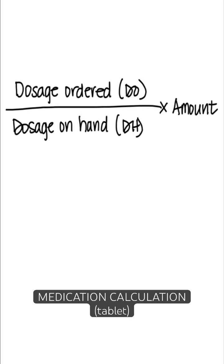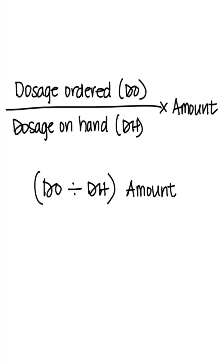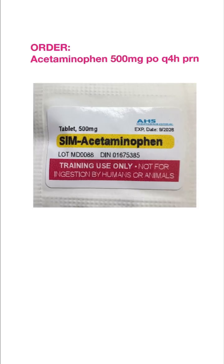Let's perform a simple medication calculation using the formula: dosage ordered divided by dosage on hand, multiplied by the amount. Here we have acetaminophen 500 milligrams. The doctor's order is 500 milligrams and we have on hand 500 milligrams per tablet, which is the amount.